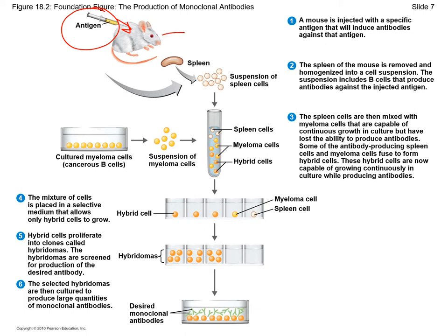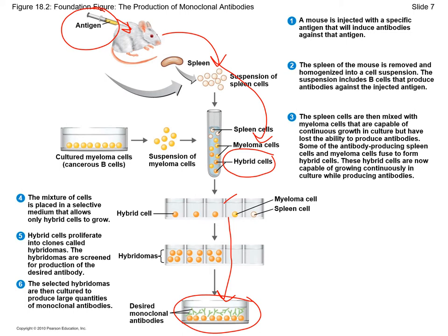Then you remove the B-cells from the mouse, usually removing the spleen or the lymph nodes. Then you mix those B-cells with cancerous cells, and you identify and isolate the hybridoma cells, then screen them to determine which one is producing the antibody you need. The hybridoma producing the desired antibody is maintained in culture, and the antibodies are purified and used.